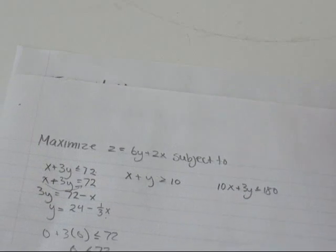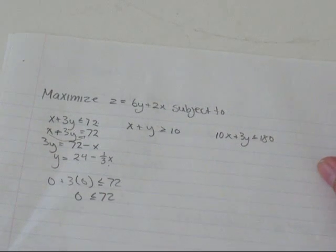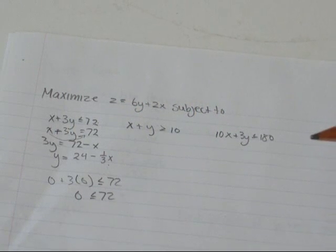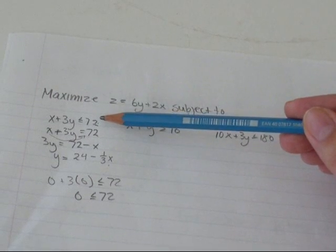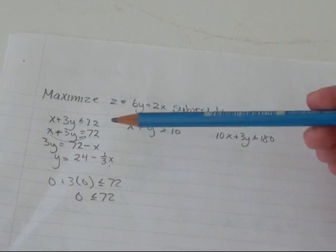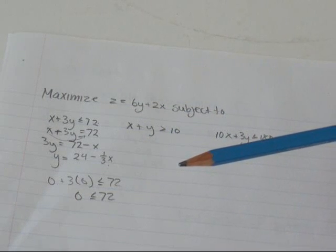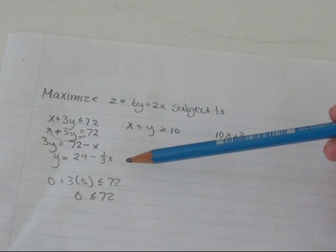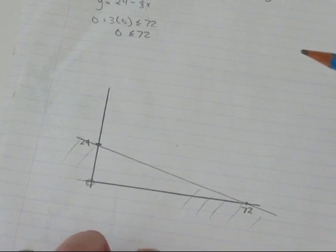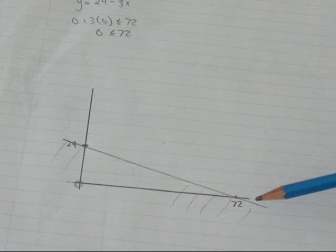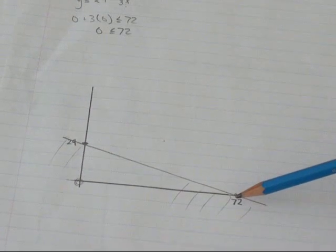So the first thing I'm going to do is find out what my feasible region is. I've already done the first one just because it's very straightforward. I've written out my steps anyway. The first thing I did, I knew I wanted to change this inequality into an equal sign. And then I changed it into y equals mx plus b form. And then I graphed it down here. And I found that the y-intercept is 24 and the x-intercept is 22 by setting x equal to 0 and y equal to 0.